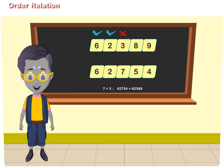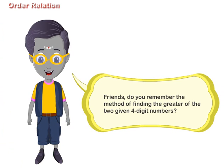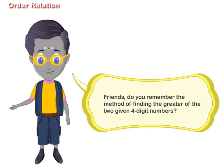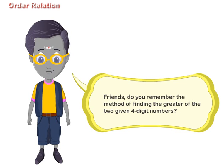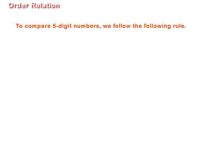Order Relation Friends, do you remember the method of finding the greater of the two given four-digit numbers? To compare five-digit numbers, we follow the same rule.